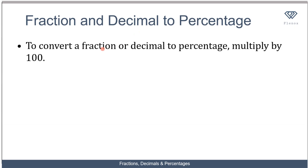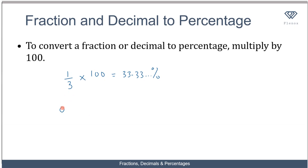To convert from a fraction or decimal to a percentage, multiply by 100. For example, 1 over 3 multiplied by 100 gives 33.33 recurring percent. Similarly, if you are given 0.6 as a decimal and want to convert it to a percentage, multiply by 100 to get 60 percent.